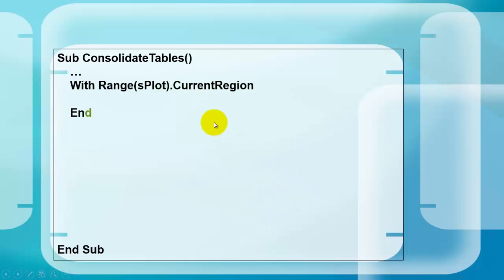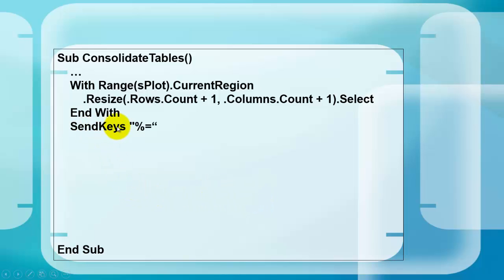In the range S plot, current region, we resize that current region with an extra row and an extra column and select that larger range, that expanded range. Then we use the send keys command. It says give me. The percentage sign stands for an ALT command. ALT equals. Do a do events command, because otherwise it will run automatically in the next command line. We want to really do this process first until it's finished.